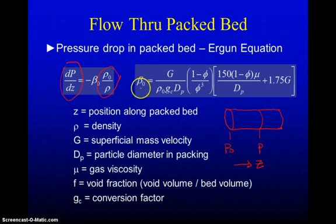For beta naught, it depends on several characteristics of the packing. We have the superficial mass velocity, the initial density, GC which is the gravitational constant, the particle diameter for the packing, the void fraction that's phi, it should be a Greek letter. It depends on the viscosity of the gas.